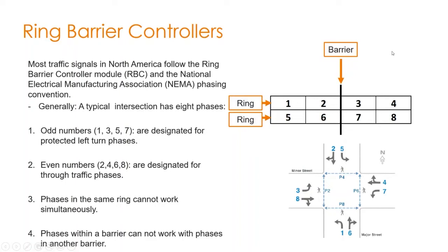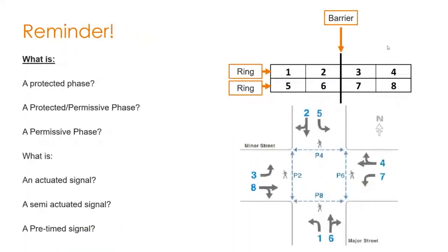We'll do a couple of examples to make sure the concept is there. A protected phase is a phase that operates on its own and does not have any permissive conflicts. Permissive conflicts are the sort of conflicts you see with a green ball — for example, when you perform a right turn while the pedestrian phase is open on the crosswalk, and you have to yield.